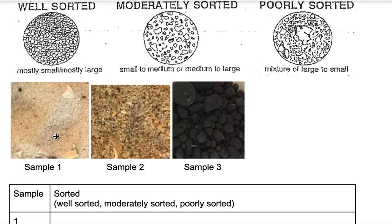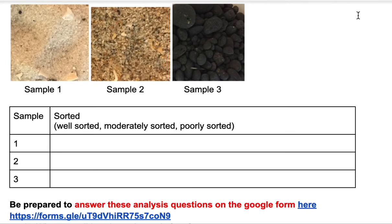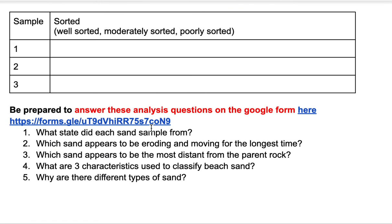Look carefully at samples one, two, and three, and determine whether the grains are some round, some medium, some small — like poorly sorted — or some medium and some small, or all really small and well-sorted. Use the terms well-sorted, moderately sorted, and poorly sorted when describing your three sand samples. Don't forget to check out the questions and submit your answers when you're done.